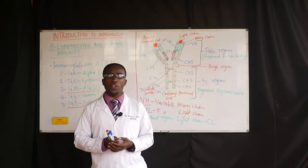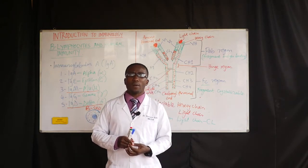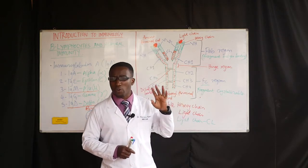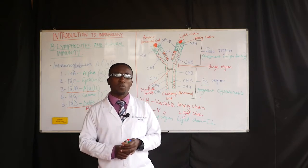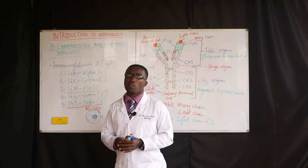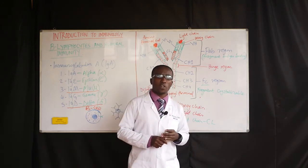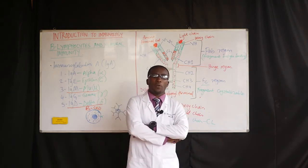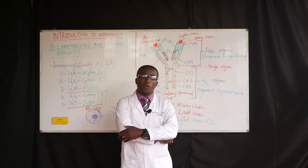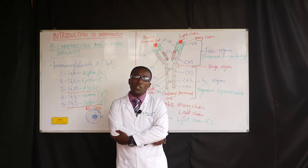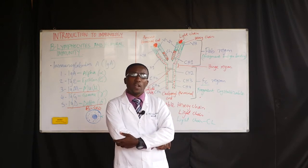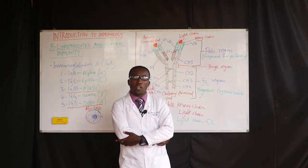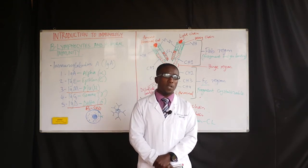IgD exists primarily as a membrane immunoglobulin, which serves with IgM as an antigen receptor on early or younger B-cell membranes, and helps to initiate antibody responses by activating B-lymphocyte cell growth. IgD and IgM are the only isotypes that can be expressed together by the same cell.